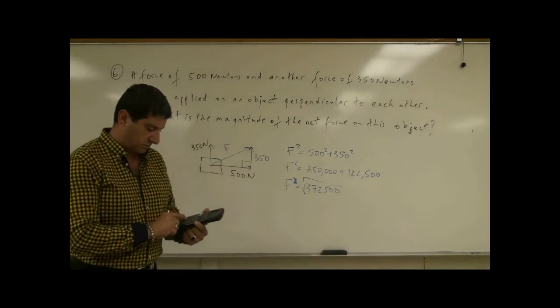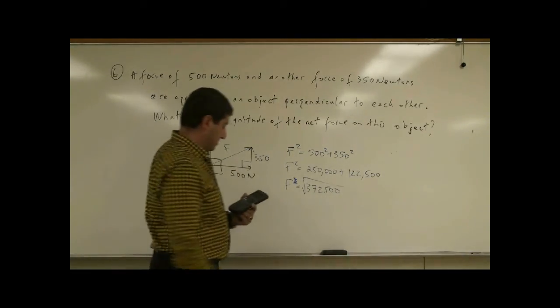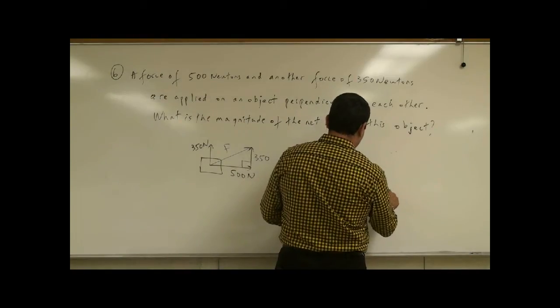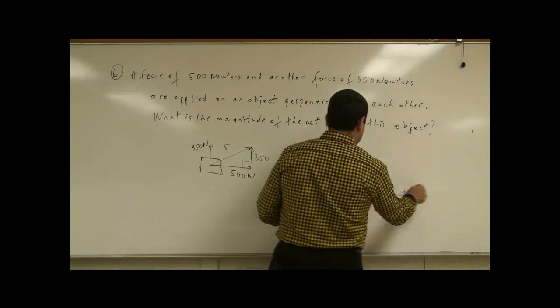Then you're going to take square root of this, and that gives you the magnitude of the net force. And it should be larger than either one alone because it's the hypotenuse of the triangle. So that's going to be 610.33 newtons.